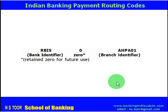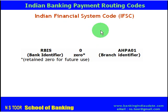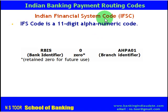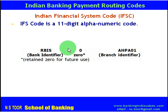The second routing code is IFSC, or Indian Financial System Code. IFSC is an 11-digit alphanumeric code, meaning it contains both numbers and alphabets, and there are 11 characters in total.